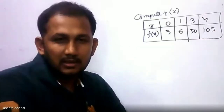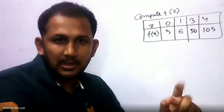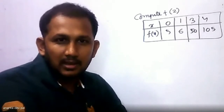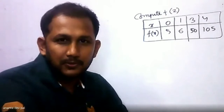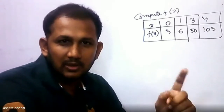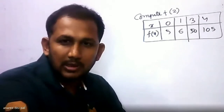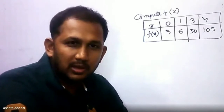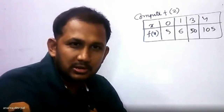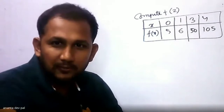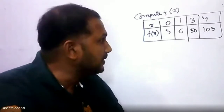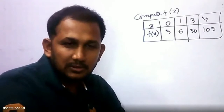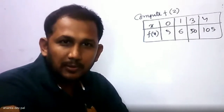Let us consider the example. In the above table, there are two values: x and f(x). We have to compute f(2). The x values are 0, 1, 3, and 4. The f(x) values are 5, 6, 50, and 105. These are the given values. We have to find out f(2).